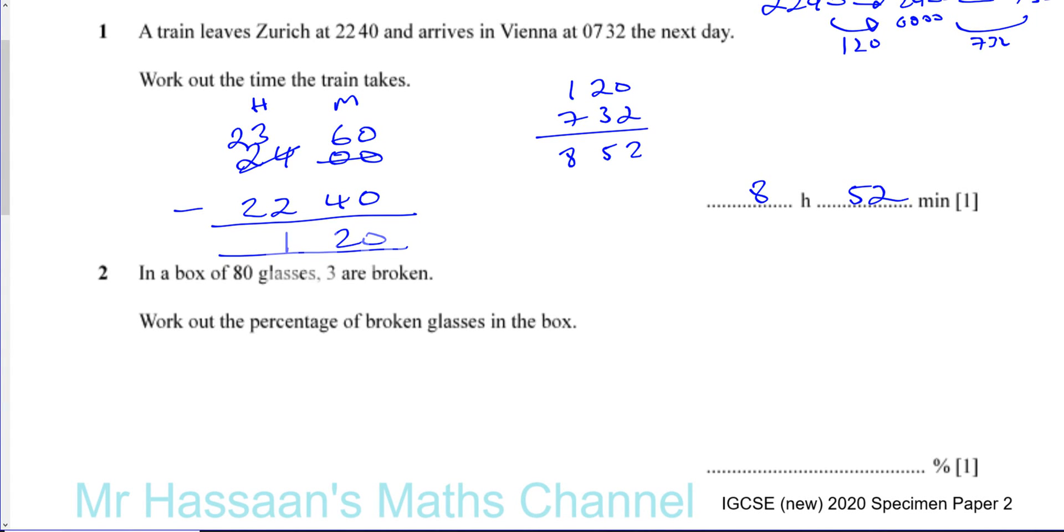Now for question number two from specimen paper two of IGCSE, the new syllabus. Here we have a question: in a box of 80 glasses, three are broken. Work out the percentage of broken glasses in the box.